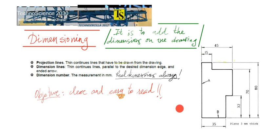The elements we use to dimensioning are these three elements. Let's start with projection lines. Projection lines are these lines. Lines that go from the drawing. They start on the drawing, they are thin continuous lines and they help you to dimension later so that you get all dimensions outside of the drawing.